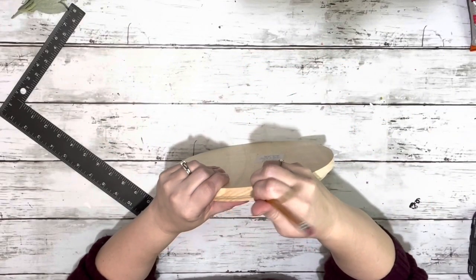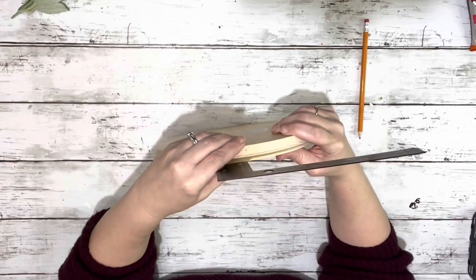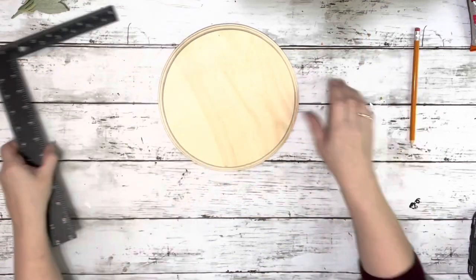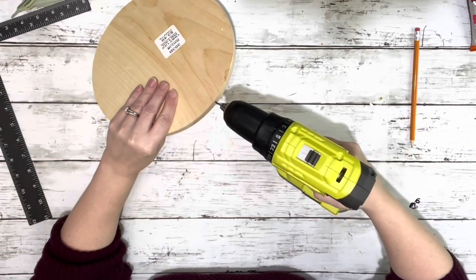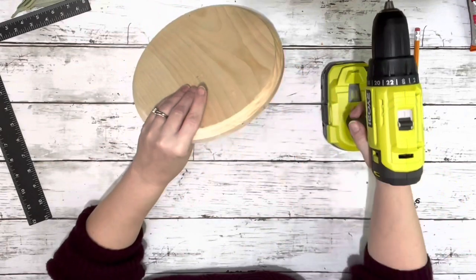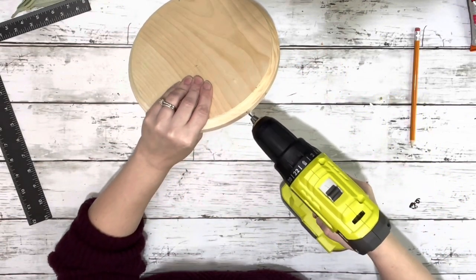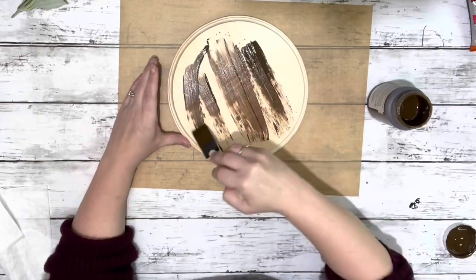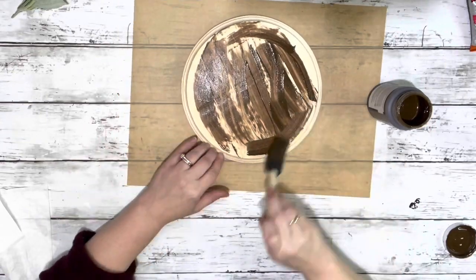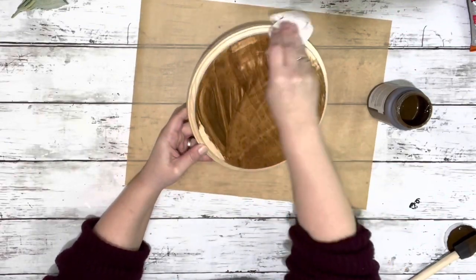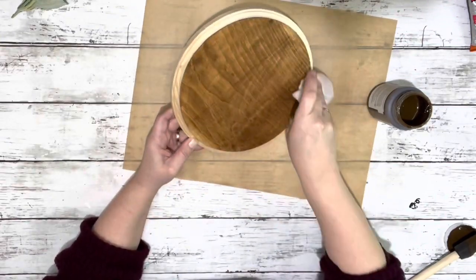I started by taking the little plaque from Hobby Lobby and marking a spot on one side using my square, or you could just use a ruler, and marking on the opposite side. Then using a 7/64ths bit and drilling a small hole in each of those sides. Then I took the Waverly antique wax and brushed it on the plaque and blended it in with a wipe. I covered the entire thing that way.